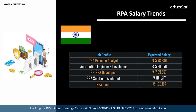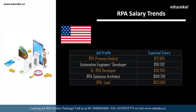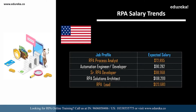Similarly, for the same roles in the USA: an RPA Process Analyst can expect around $72,000; an Automation Engineer or Developer around $90,000; a Senior RPA Developer around $98,000; an RPA Solutions Architect around $100,000; and an RPA Lead around $123,000. Again, a huge amount of money for any career role.